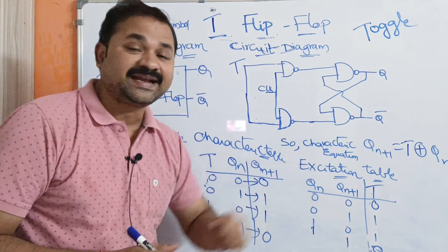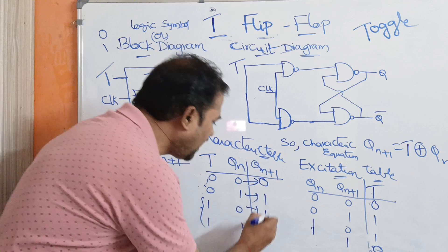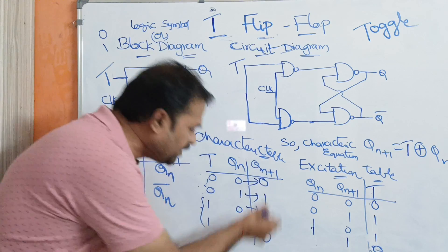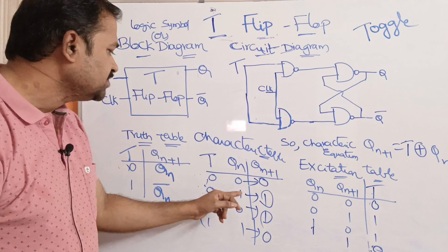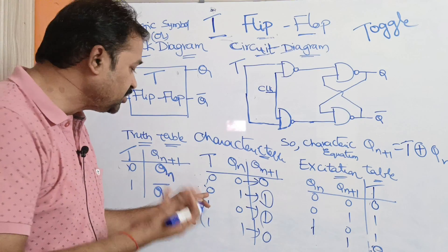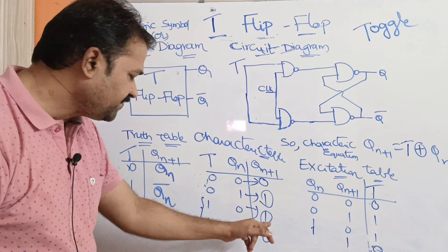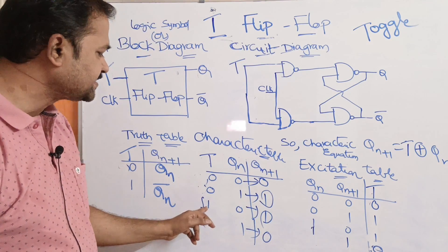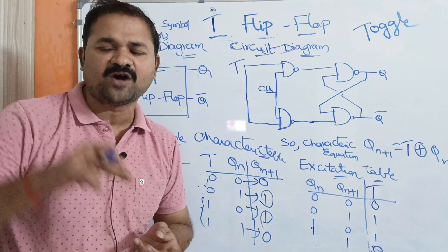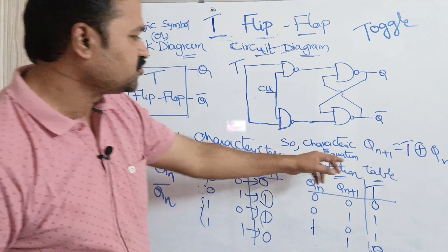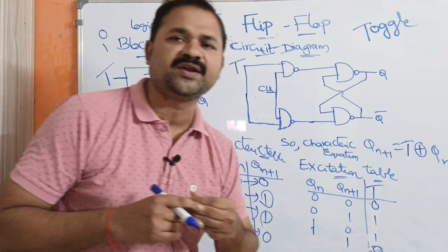Now let us see the characteristic equation. In the Q(n+1) column we have two 1s. The first 1 corresponds to T-bar·Q(n), and the second 1 corresponds to T·Q(n)-bar. This is nothing but the formula for Exclusive-OR. So the characteristic equation is: Q(n+1) = T ⊕ Q(n).